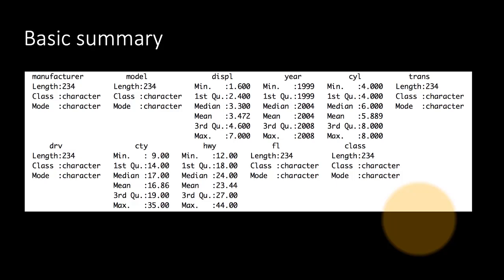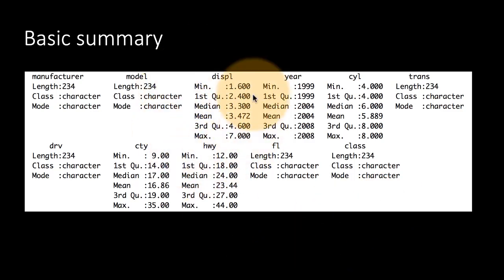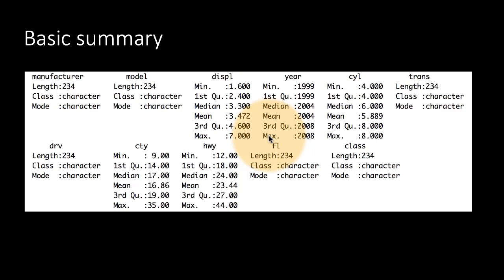The first thing we do whenever we get any data set is to get a basic summary. We can use the summary function to get that summary. It gives us for every column summary information, and the kind of information we get differs depending upon the kind of column. If it is a numeric column, then we get the typical six-number summary: minimum, first quartile, median, mean, third quartile, maximum. That gives a good idea of the distribution of the numeric variable.